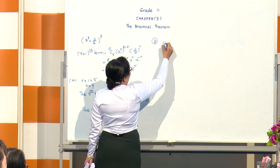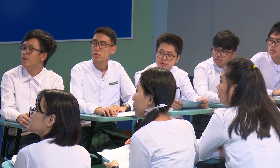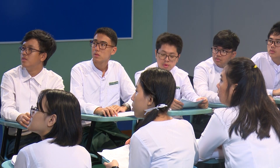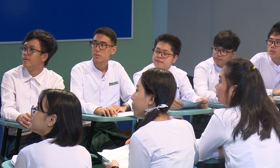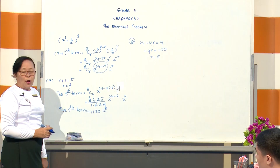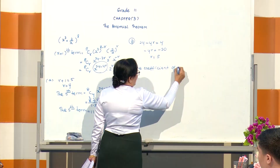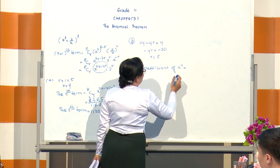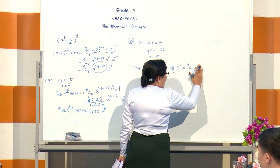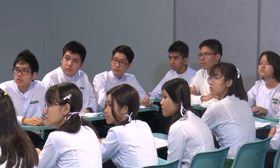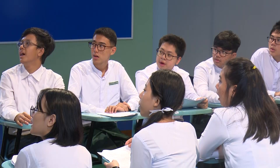To find the term containing x to the power 4: set 24 minus 4r equal to 4. Then minus 4r equals minus 20, so r equals 5.